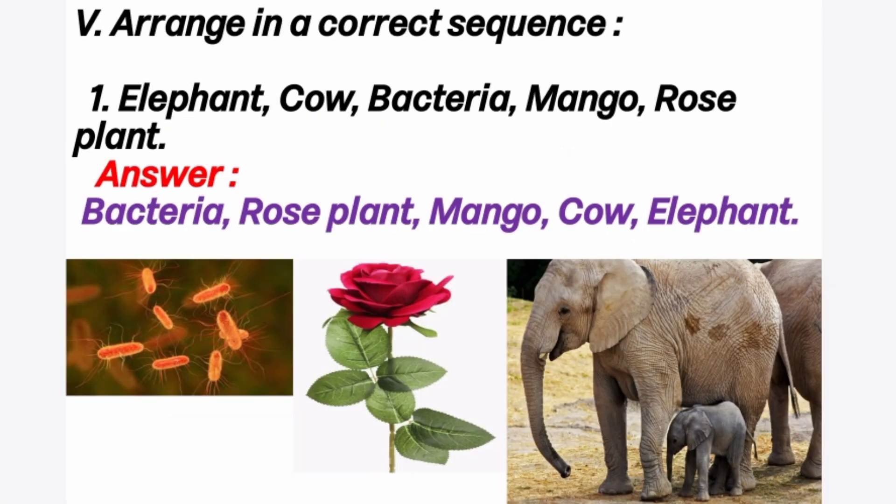Fifth, arrange in correct sequence. First question: elephant, cow, bacteria, mango, rose plant. Answer: first, bacteria; second, rose plant; third, mango; fourth, cow; fifth, elephant. Bacteria is a microorganism, and the sequence goes from smallest to largest organism.